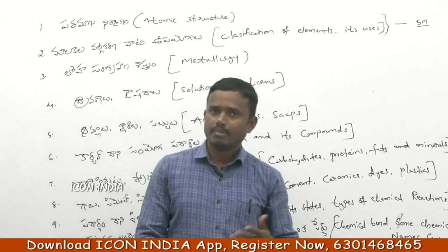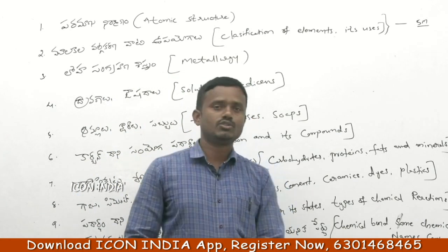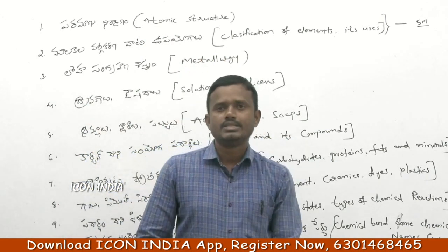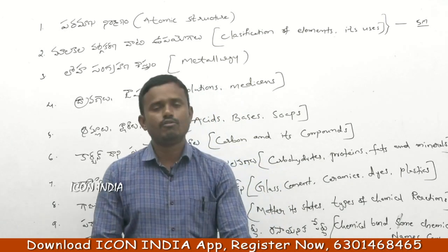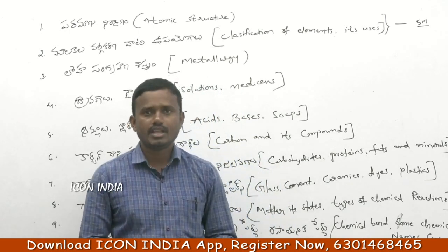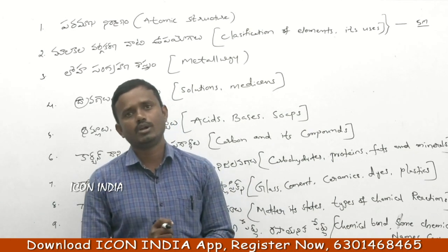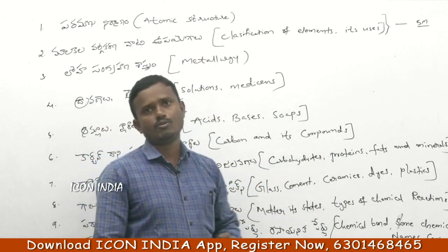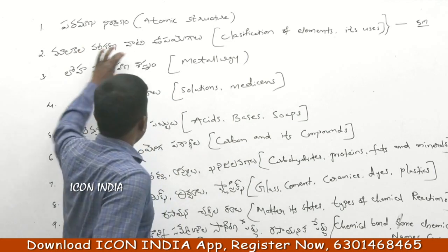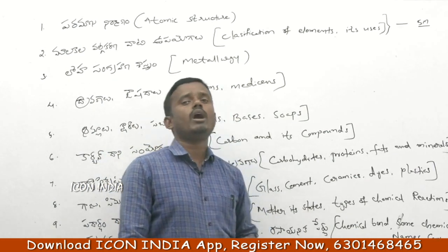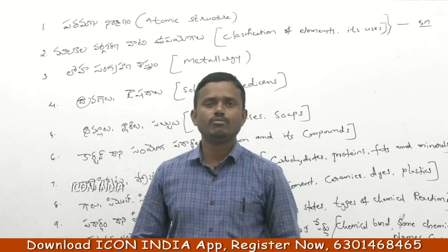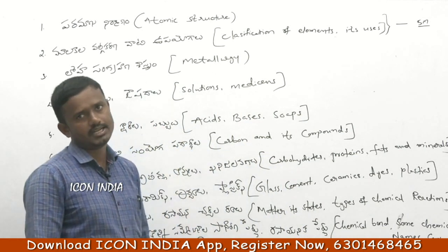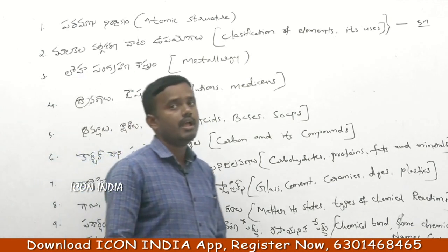In periodic table classification, we have divisions like 1st group, 2nd group, 3rd group, 4th group, 5th group, 6th group, 7th group, and so on. We also look at radioactive elements like uranium, thorium, and radium.